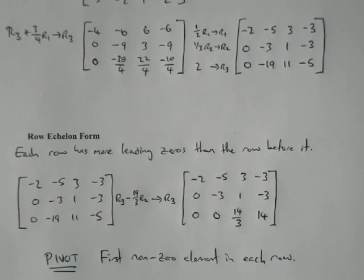So once you get into the form where you've got more zeros at the start of each row than there was at the start of the row before, then you're in row echelon form. So let's take the matrix that we had, that we finished up with before.